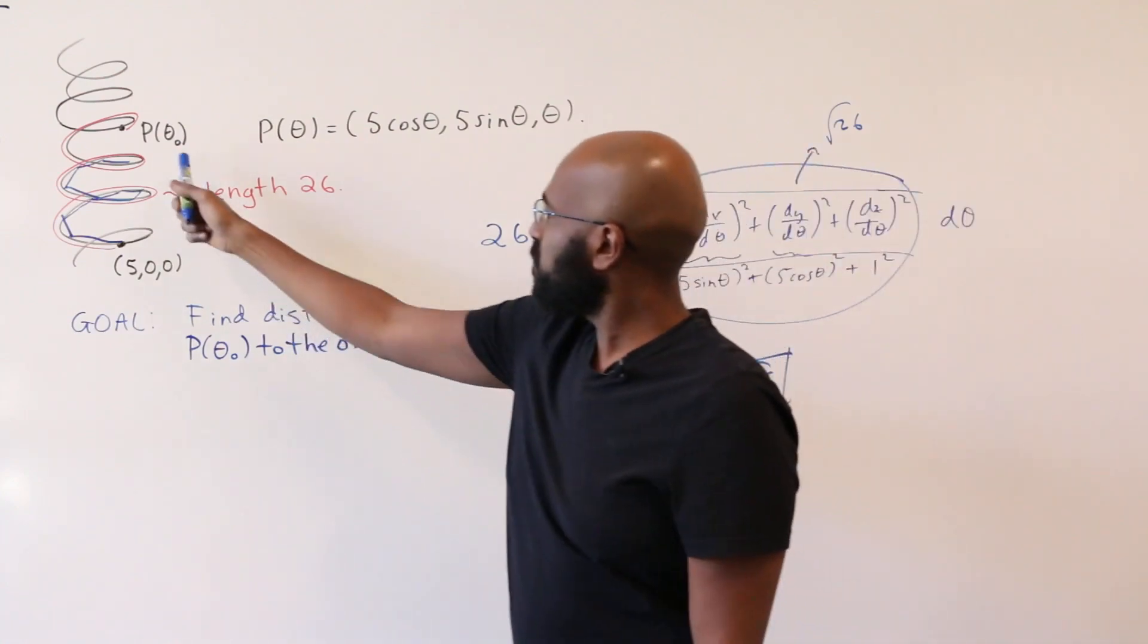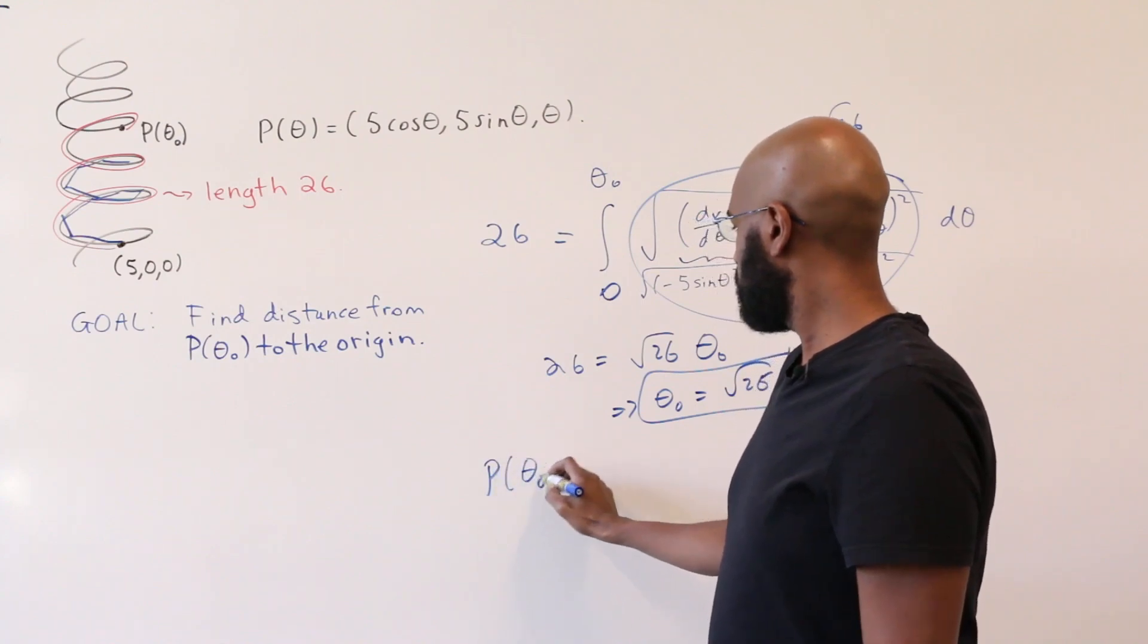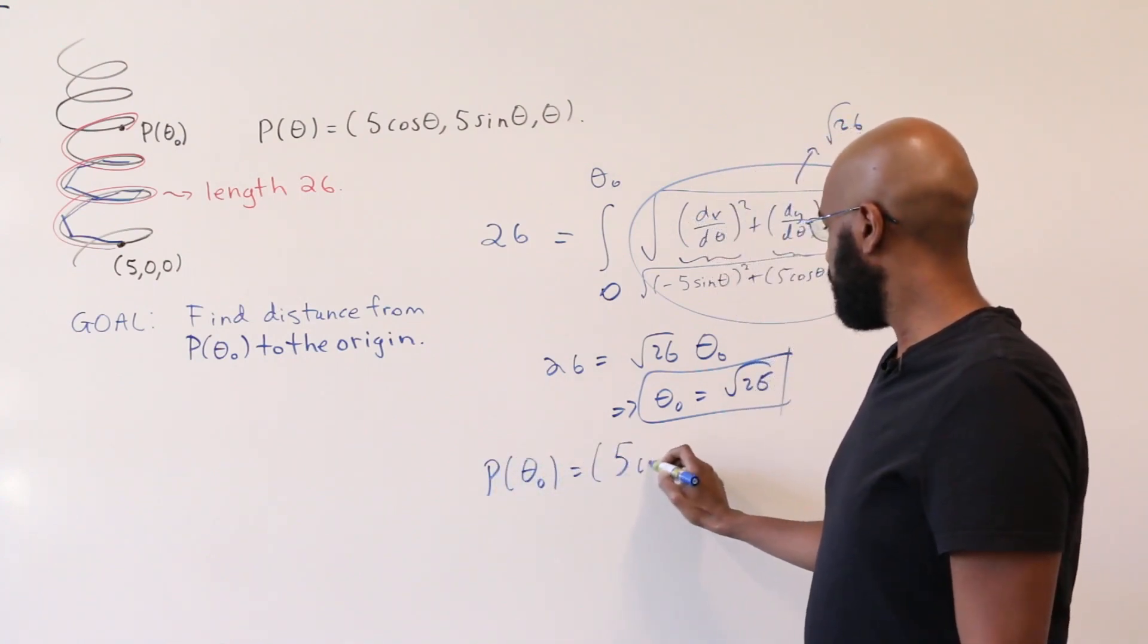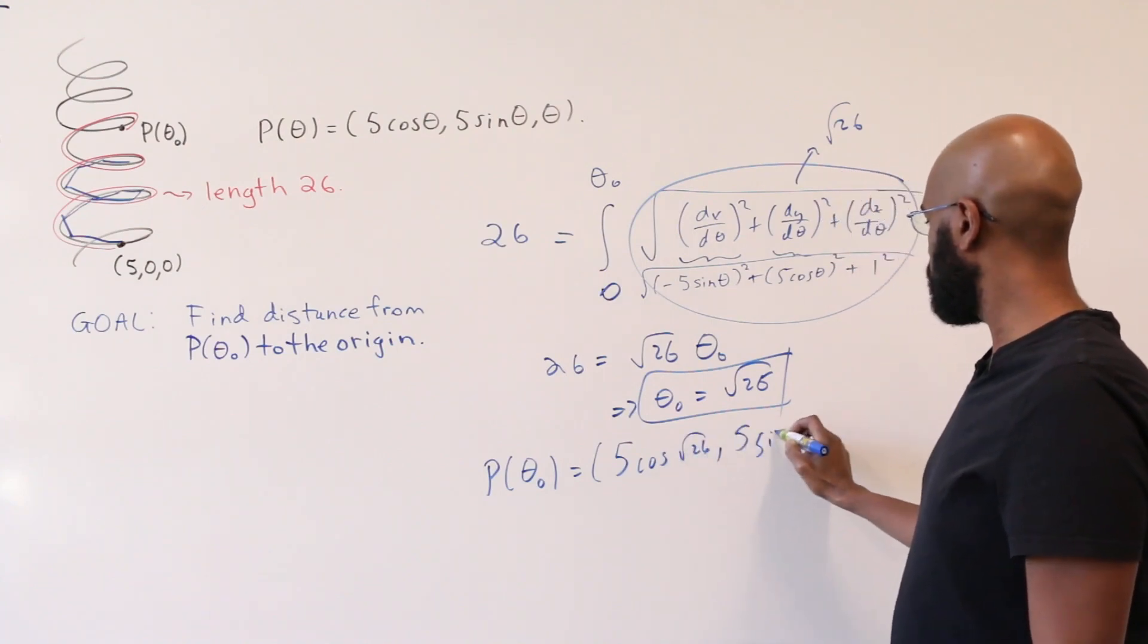Okay, so that gives us the information of what P(θ₀) is. P(θ₀) is (5 cos √26, 5 sin √26, √26).